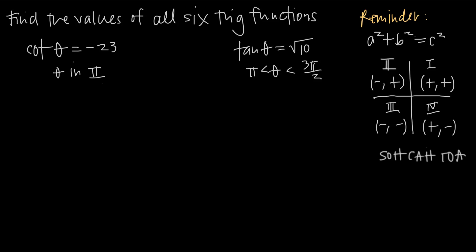In this video we've been asked to find the values of all six circular trig functions given only the value of one of the trig functions and the quadrant in which theta is sitting. So in this first example, we've been told that cotangent of theta is equal to negative 23 and that the angle theta is in quadrant two.